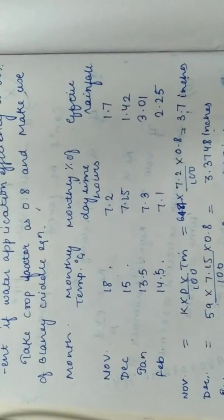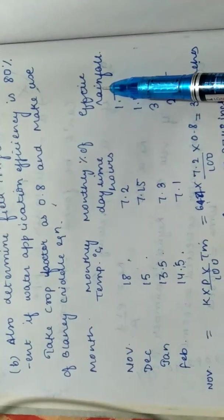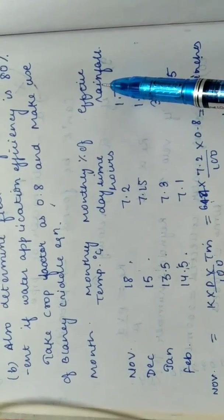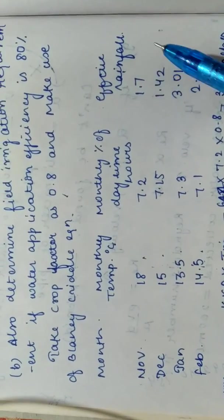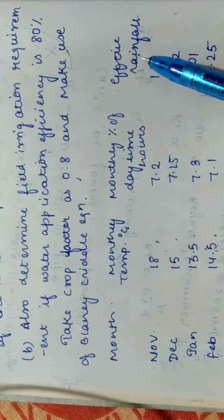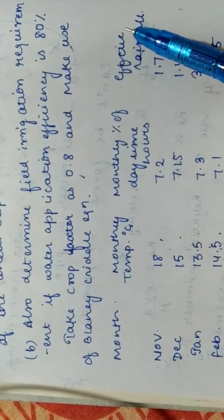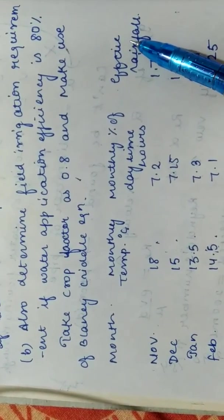So here in this question, already we know the useful rainfall or the effective rainfall is the same thing. Suppose I have a field, I have a crop in that, that crop needs 10 centimeter of water every day. Now, to give that crop 10 centimeter of water, I should supply 10 centimeter of water, but already some rainfall is occurring in that area which is 5 centimeter